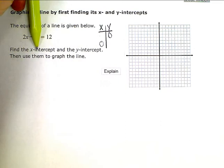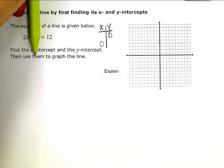Just pretend that term isn't even there. If I ignore the y-term, I'm left with 2x = 12.